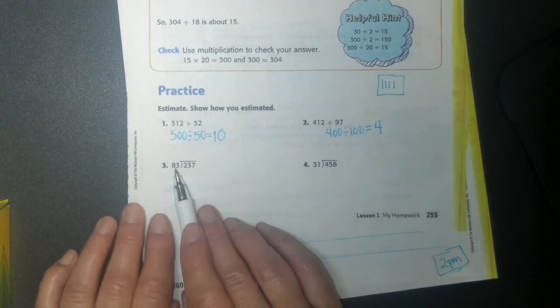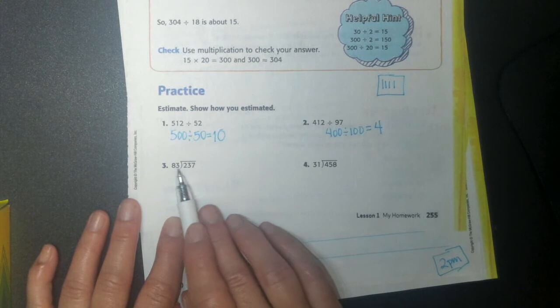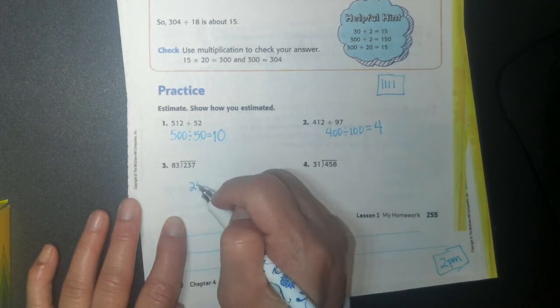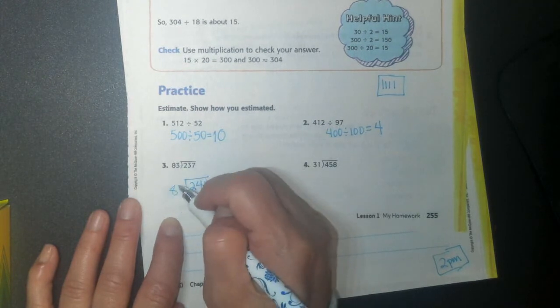Alright, and my next one, I have 83 going into 237. So I'm going to change my problem. I'm going to turn my 237 into 240, and I'm going to turn my 83 into 80.